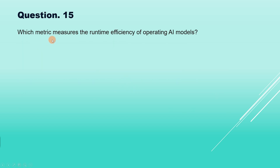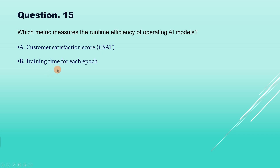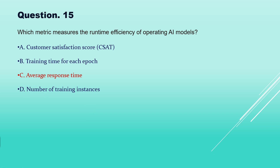Now question number 15: which metric measures the runtime efficiency of operating AI models? The options are: customer satisfaction score (CSAT), training time for each epoch, average response time, and number of training instances. The correct answer is option C, average response time, because it measures how quickly an AI model produces predictions or outputs during runtime, making it the key metric for evaluating runtime efficiency.